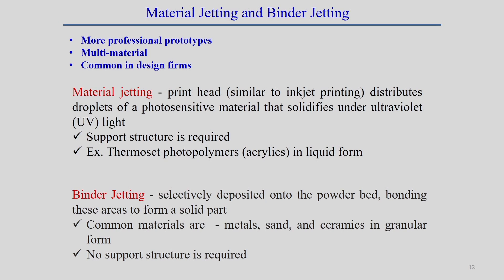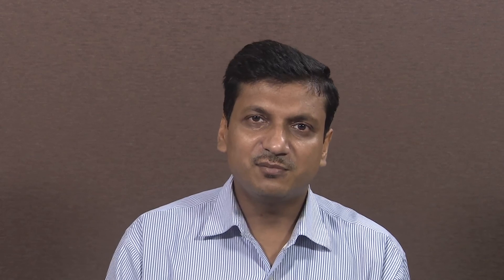Thermoset polymers and acrylics in liquid form are normally used in material jetting. In binder jetting, a binding element is selectively deposited onto a powder bed instead of a laser, binding the powder at selected positions to form a solid. Metals, sand (for molding), and ceramics in granular form can be handled using a binding agent. No support structure is required in binder jetting.